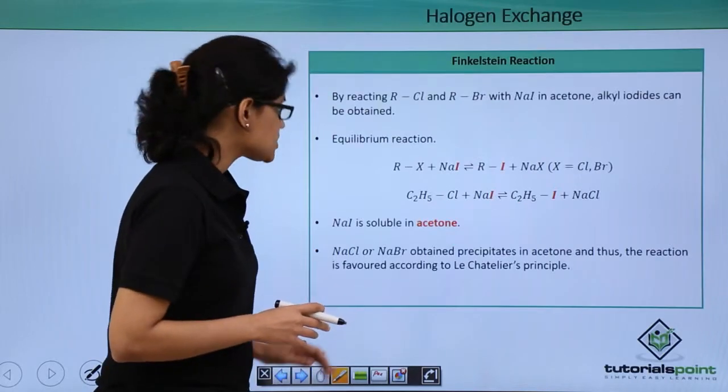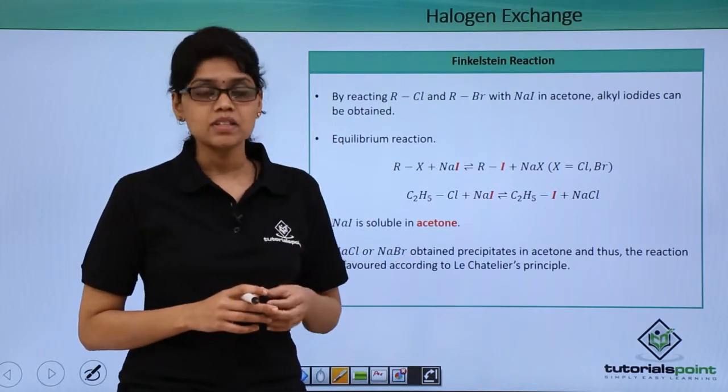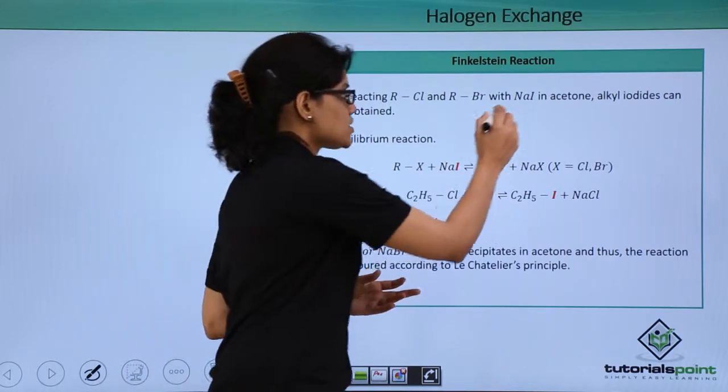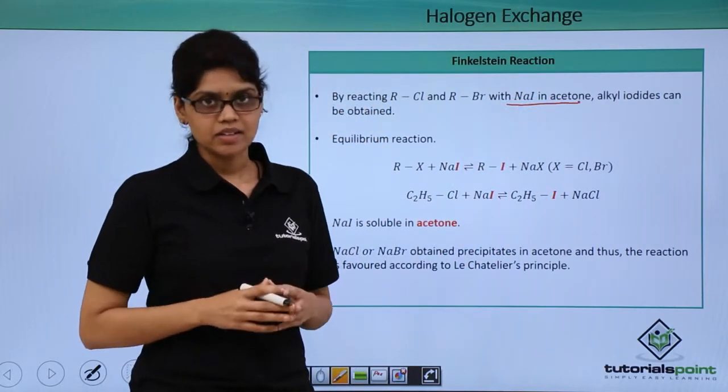Here, we react an alkyl chloride or alkyl bromide with sodium iodide in acetone (NaI in acetone) such that the final product obtained is an alkyl iodide.